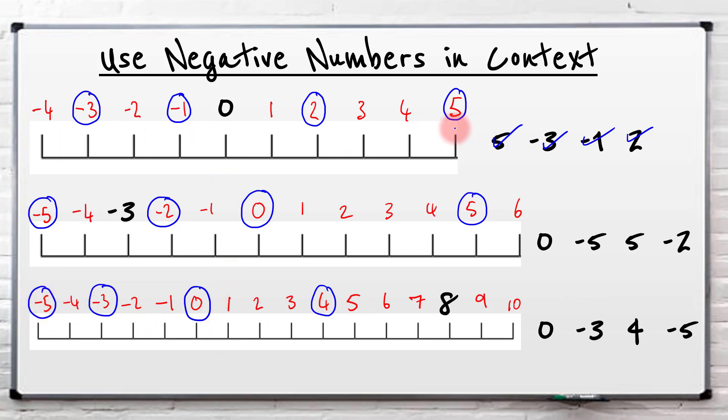So whenever you're putting your numbers on the number line, just put them all in. And always just be careful in case the increments are on twos or fives, but put them all on and you won't make any mistakes.